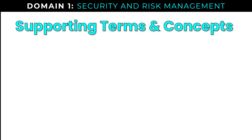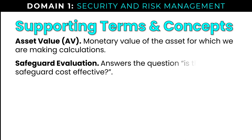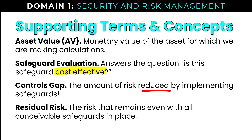Some supporting terms to touch on: asset value is pretty simple — that's the monetary dollar value of the asset. Safeguard evaluation is step six; it answers the question, is this safeguard cost effective? In other words, are we spending less on the safeguard than we are saving by executing on that safeguard? The controls gap is the amount of risk reduced by implementing the safeguard. And residual risk is the risk that remains even with all conceivable safeguards in place, because not every safeguard will eliminate 100% of your risk — so that residual risk has a dollar value.